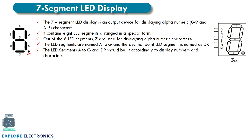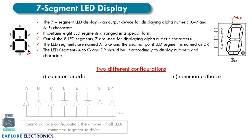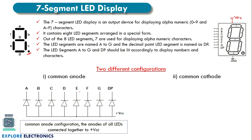To turn on and off the LEDs in a 7 segment display there are two methods: common anode and common cathode. In the common anode method, all the anodes of the 8 LEDs are connected to VCC. The diodes are ready to be forward biased. To turn on a specific LED, we need to provide 0 to its corresponding segment pin — A, B, C, D, E, F, G or DP. Since the anode is already connected to VCC, we call it common anode.